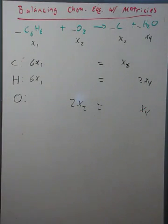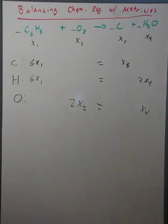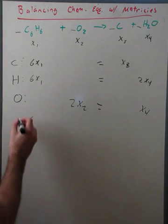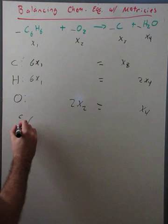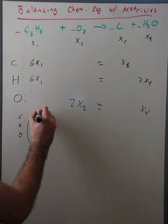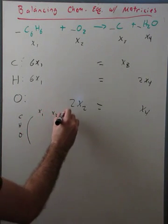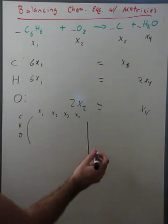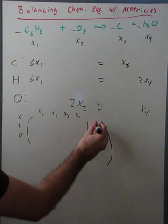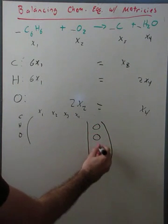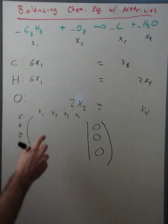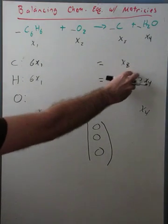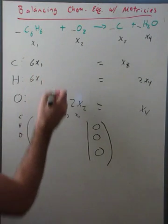So now we need to write this as a matrix. That's just what we're going to do. We're going to have carbon, hydrogen, and oxygen rows. And then our x1, x2, x3, x4 rows. And then we're going to write this as an augmented matrix with everything equaling zero.